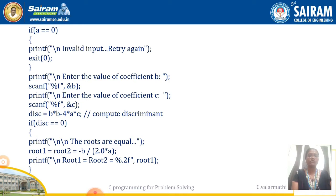Then we need to find the disc value. How we can find the disc value: b squared minus 4ac is the value of disc. How this is written in C language: b*b - 4*a*c. So this is the equation for finding the disc, and that has been done.